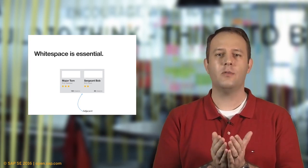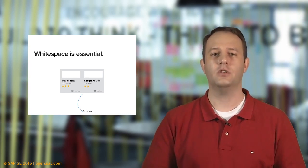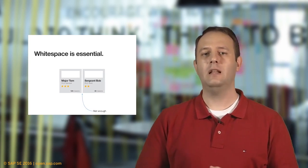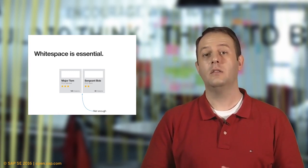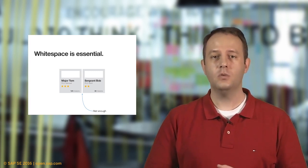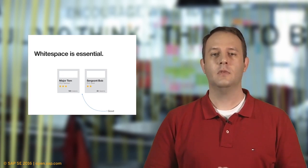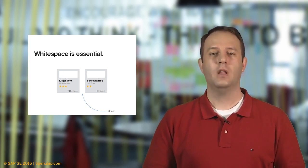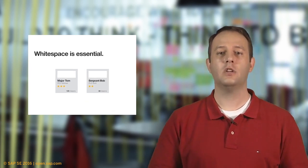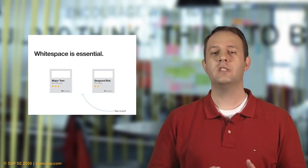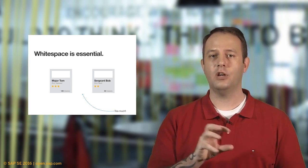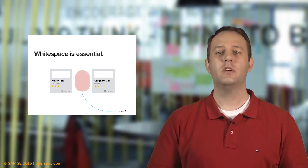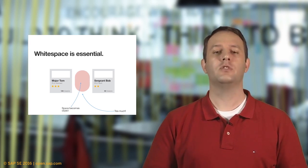We need to start splitting these two elements apart. If we split them a little, this probably isn't enough white space between the two elements — they're still too close. We need to space them a bit more. Now this is good. However, be aware that you can actually have too much white space, and we start to perceive it as a separate element — a third object between the two. So in other words, you really can have too much white space.